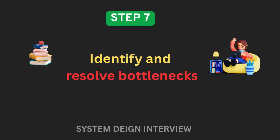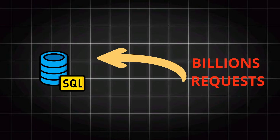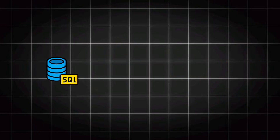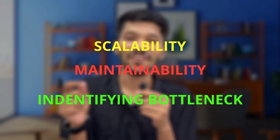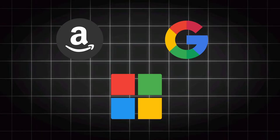Step 7 is Identifying and Resolving Bottlenecks. Your design looks perfect until billions of requests hit your server — and boom, it goes down, causing downtime and angry users. This is the final boss: scalability, maintainability, and identifying bottlenecks. Identify the bottlenecks in your system architecture and explain approaches to mitigate them. Ask yourself: are there enough database replicas? Is there a single point of failure? Do we need database sharding? This blueprint helps you build a system that can serve real traffic, scale to millions, and impress top-tier companies.